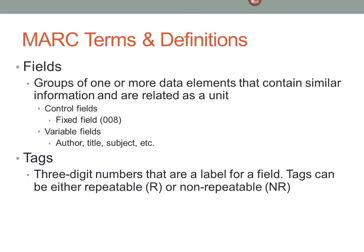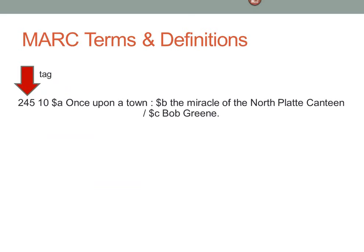Going along with fields is the concept of a tag — a three-digit number that labels the field and tells the computer what type of information is in it. People sometimes use tag and field interchangeably, but technically the tag is the label for a particular field. Tags can be repeatable or non-repeatable. An item generally has one title, so that's non-repeatable, but you can have many subject headings, so those tags are repeatable. In the 245 field, the number 245 at the beginning is the tag and all that information together is the field.